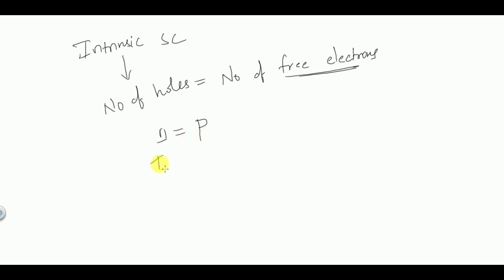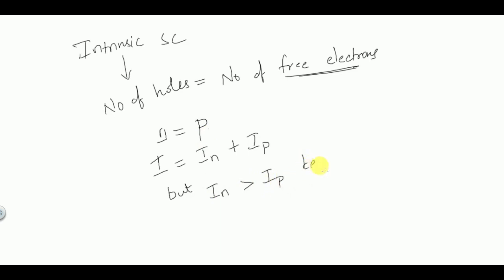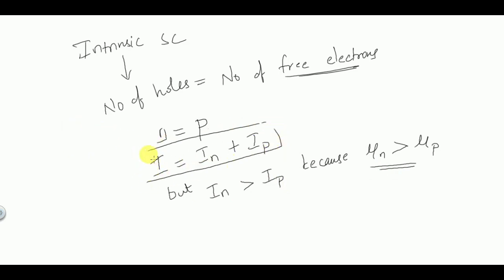The total current is equal to the sum of electron current and hole current. Even though the total number of electrons equals the total number of holes, the current given by electrons is greater than the current given by holes. This is because the mobility of electrons is greater than the mobility of holes. In the intrinsic semiconductor, the total current is due to both electrons and holes.